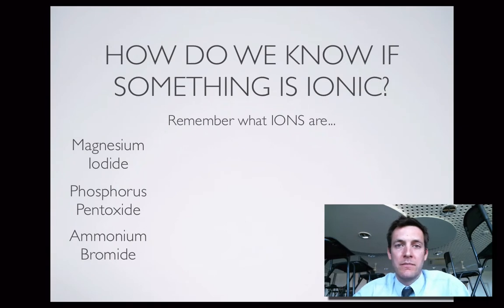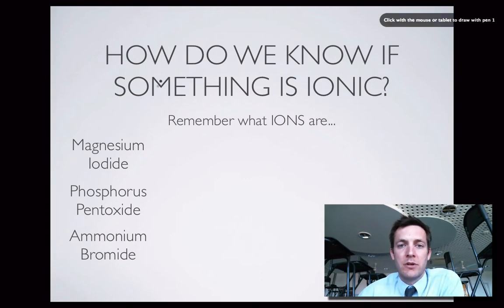So to start with, how do you know if something is ionic? Well it's important to remember what ions are. From the very basics of year 11 we should remember that ions are atoms that have gained or lost electrons. So if a substance, a compound made of two or more ions, if it's going to be ionic, it's got to be made of ions. So something must have gained and something must have lost electrons.